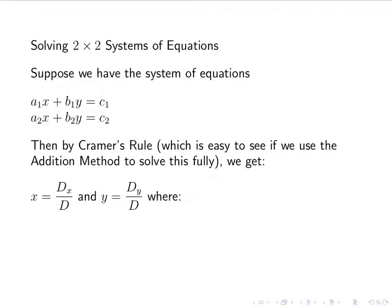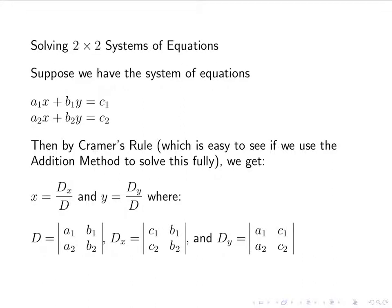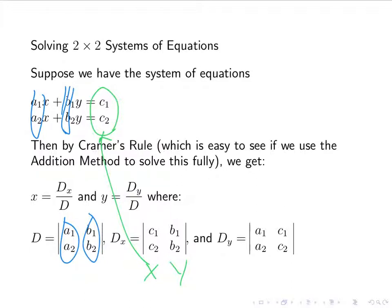With Cramer's Rule, x equals Dx over D and y equals Dy over D, where these D's are determinants of matrices. The matrix D — the denominator for both x and y — is formed by looking at the coefficients of x as the first column and the coefficients of y as the second column. For Dx, we replace the x column with the right-hand side; the y column stays the same.